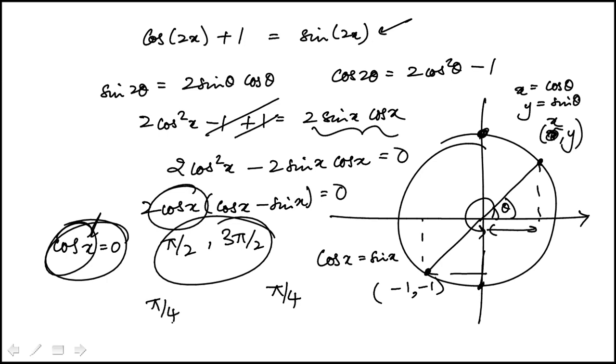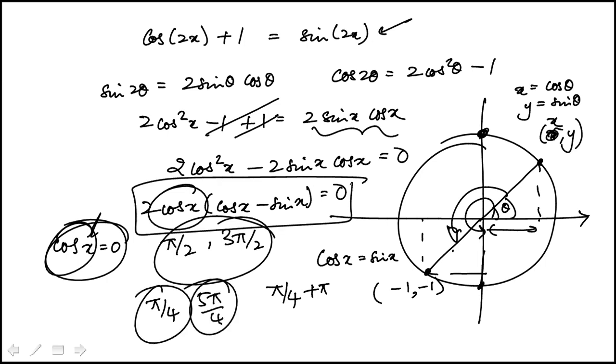And then add pi to that to get to this point, which would be pi over 4 plus pi, which is 5 pi over 4. So these are the four values for which this expression will be equal to 0, which is equivalent to the original. Look at the answer choices. This matches with choice C.